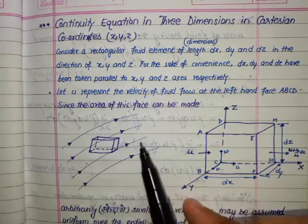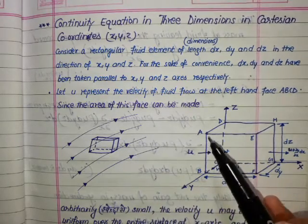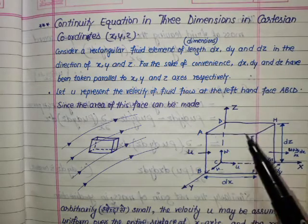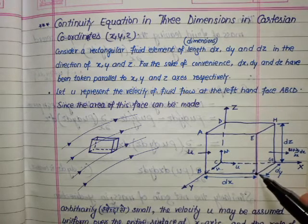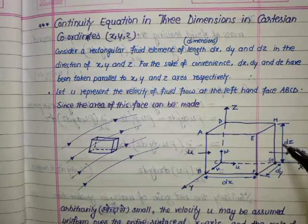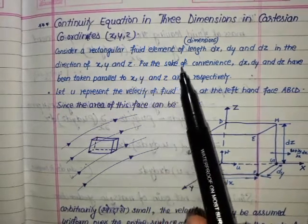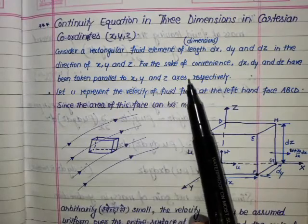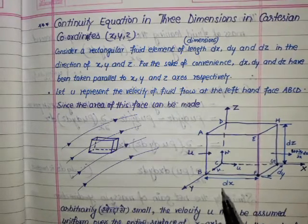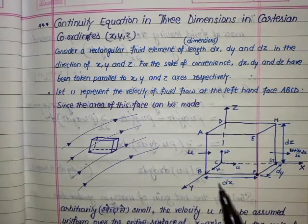Here we can see the streamline in which fluid is flowing, and this is the rectangular fluid element we have considered. In the enlarged view, dx is the length in the x direction, dy is in the y direction, and dz is in the z direction. For convenience, dx, dy, and dz have been taken parallel to the x, y, and z axes respectively.